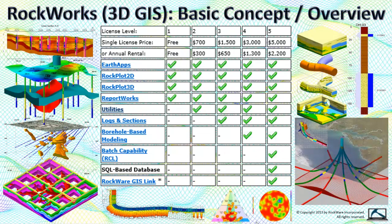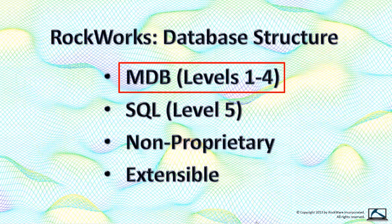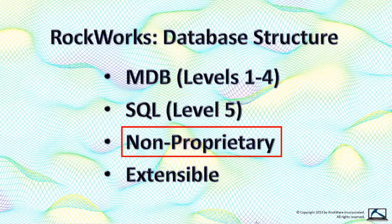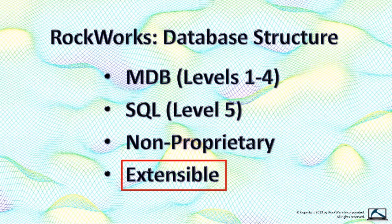Rockworks is a cornucopia of 3D GIS model filtering and volumetric tools aimed at the mining, petroleum, civil engineering, hydrogeology, and environmental markets. Levels 1 through 4 use an MDB format, while Level 5 provides an option to use SQL for larger, more robust data handling. Everything we do — including our database structures, algorithms, and file formats — is non-proprietary. We have no secrets. You can add your own fields and tables to the database; Rockworks won't necessarily be able to do anything with this data, but it's there if you need it for other specialized applications constructed in-house. Just don't rename any of our tables or fields.